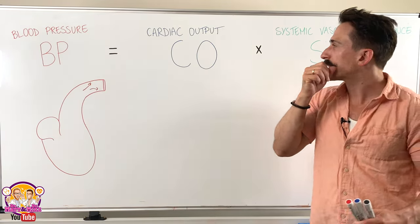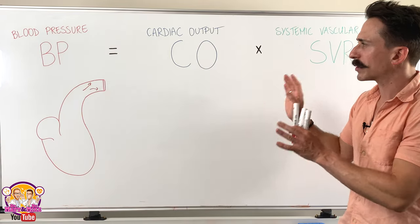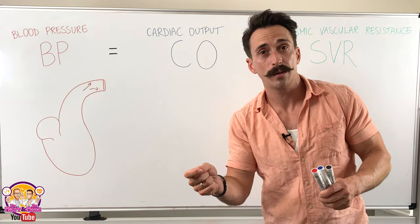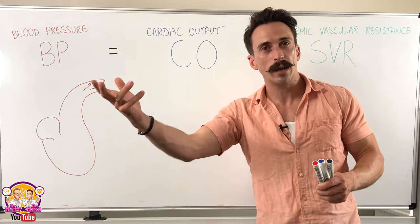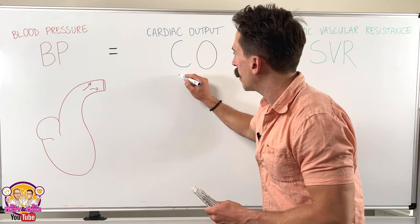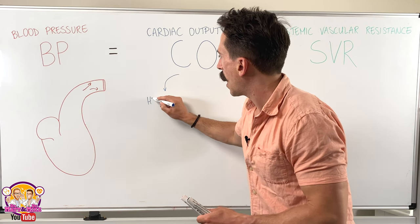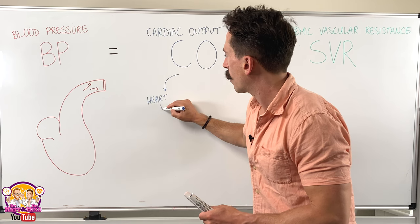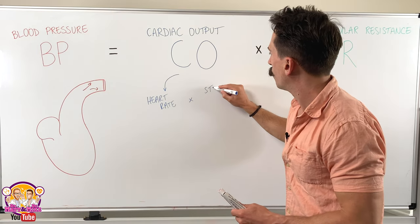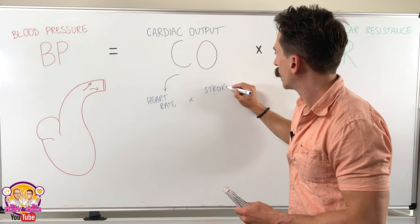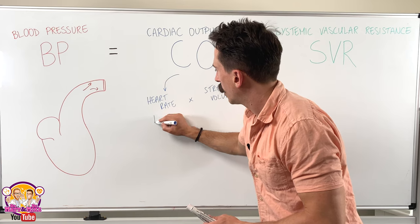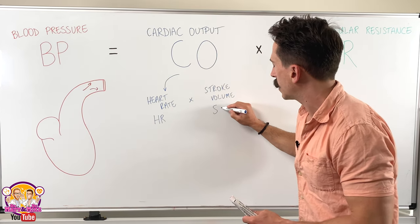So what are we looking at here? What's cardiac output? Cardiac output simply is how much blood is ejected from your ventricles per minute — every minute, how much blood gets squirted out of your ventricles. It has its own really simple equation: cardiac output equals heart rate times stroke volume. We can write those down as HR for heart rate and SV for stroke volume.